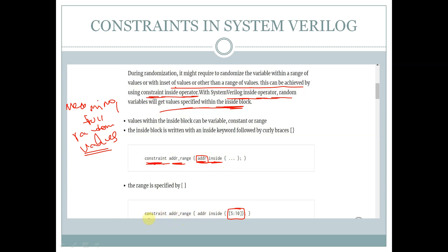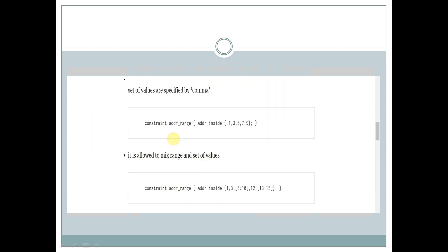In this example, we have a constraint called address_range. We take the variable addr, specify the keyword inside, and give the value 5 down to 10. This means the values of addr will be from 5 to 10.